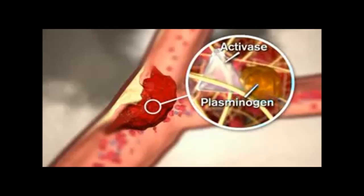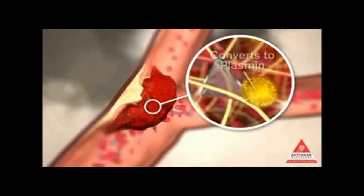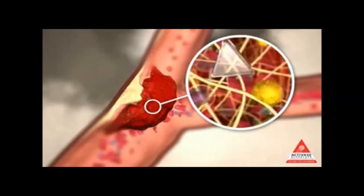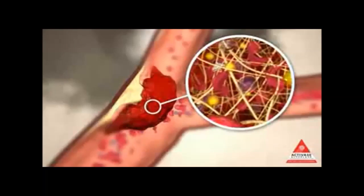Activase is administered by IV infusion within three hours of acute ischemic stroke symptom onset. Activase binds to the fibrin in a thrombus and converts plasminogen to plasmin.